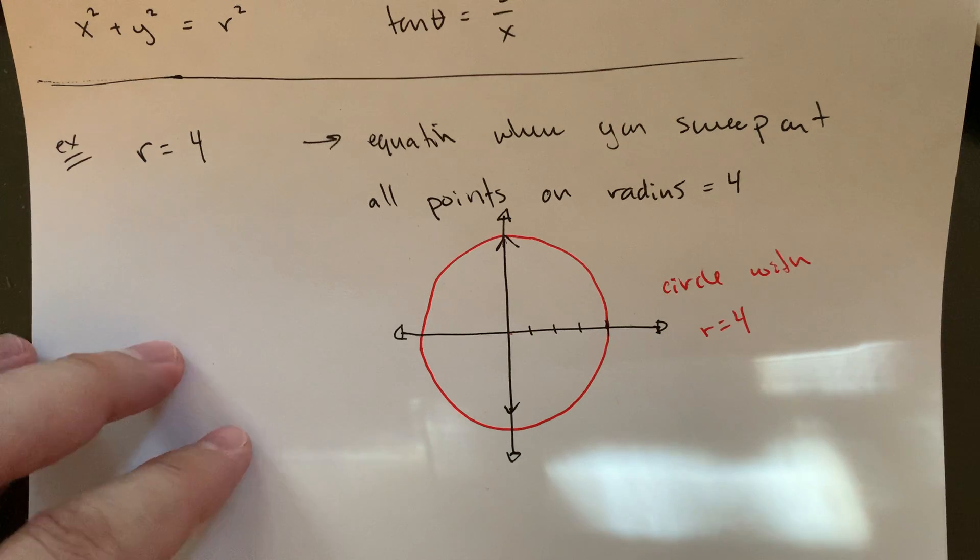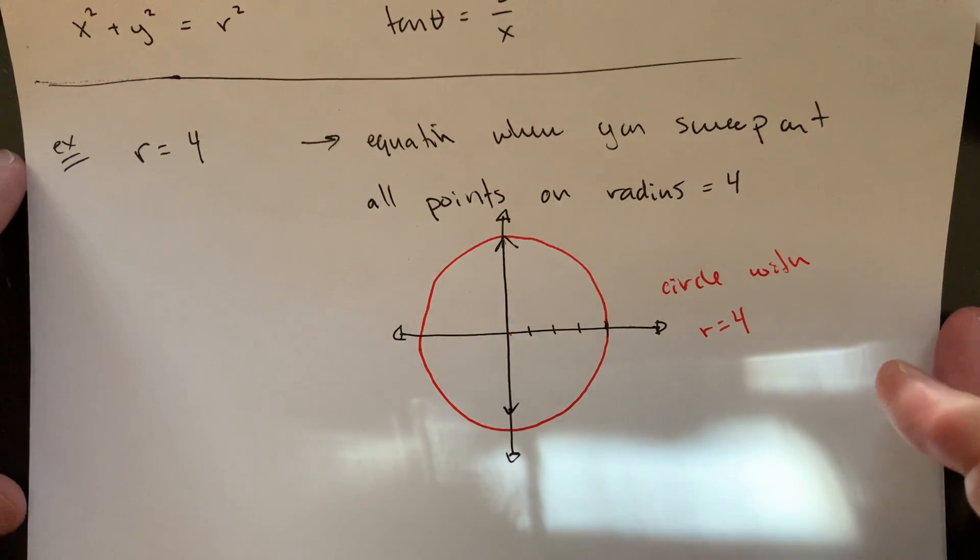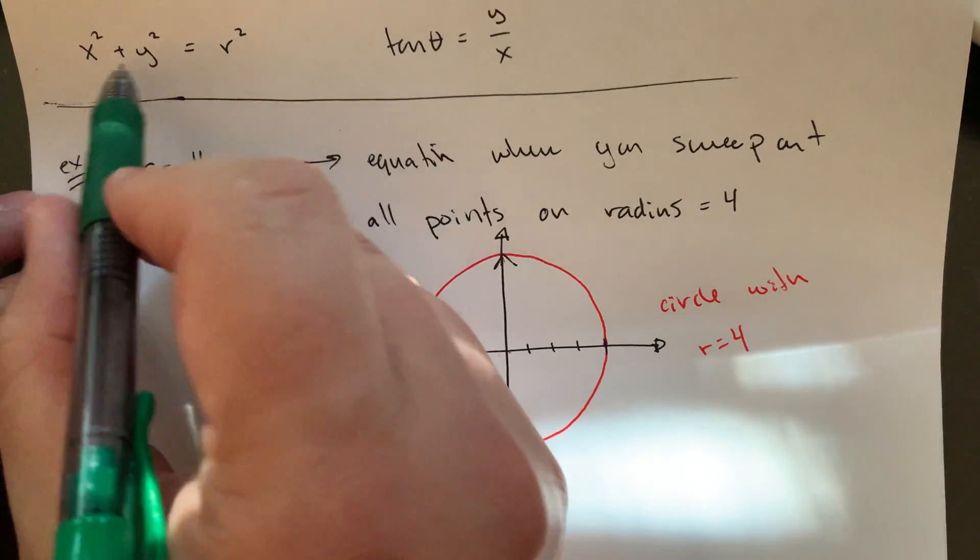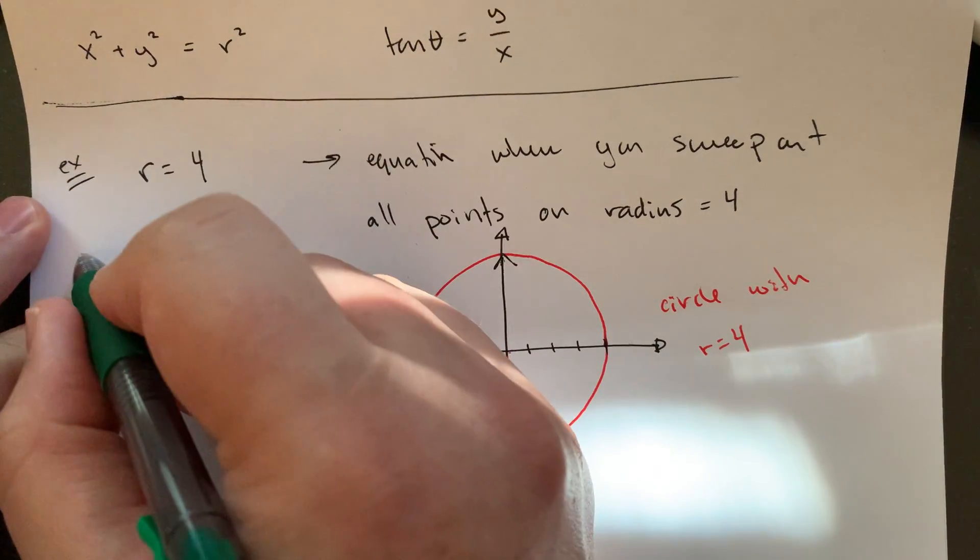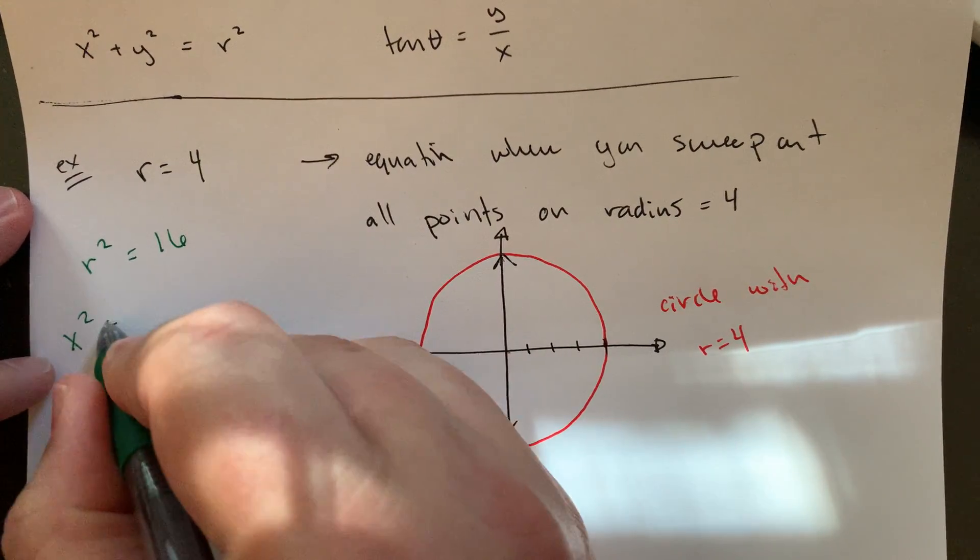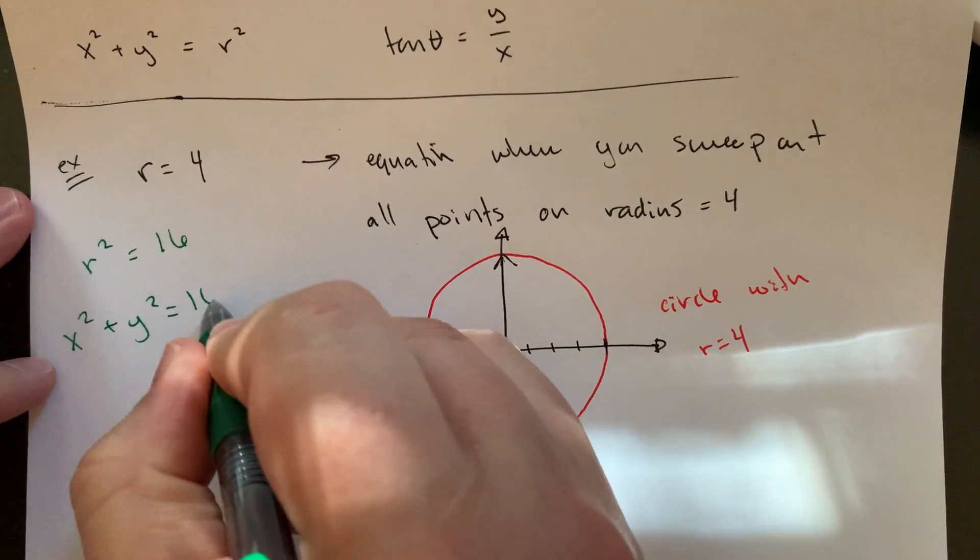If I wanted like a rectangular version of this equation, what you probably use is this x squared plus y squared is r squared. So if your r is four, your r squared is 16. So that means x squared plus y squared is 16.